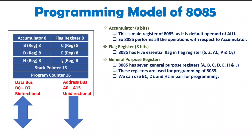Sometimes in programming you may need to have 16 bits of operation. At that time, we can use these resistors in pairs also. So you can use B, C — D, E — H, L. That is general purpose resistors and B,C, D,E, and H,L can be used in pair. Here, you cannot use a pair of B,E or H,E — that is how you cannot have pair. There is a pair with B,C — D,E — and H,L. Remember this.